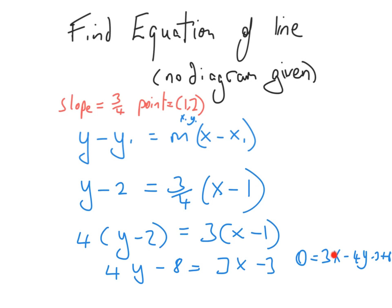We bring the terms across the equal sign so that we start with 3x, then the 4y changes to minus 4y, and the minus 8 changes to plus 8. All that remains is to add the two numbers to simplify. Now you can see the format: x followed by y followed by a number. Perfect.